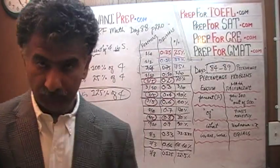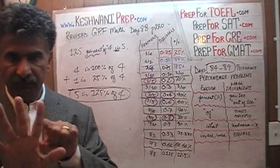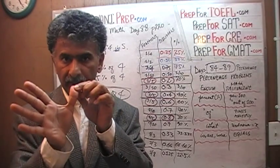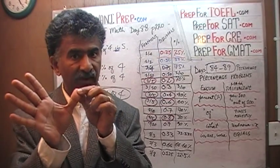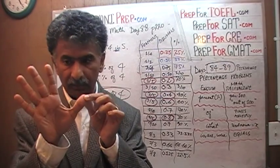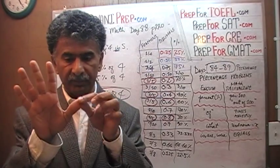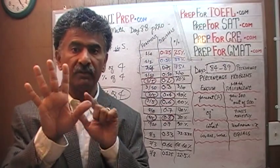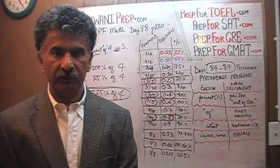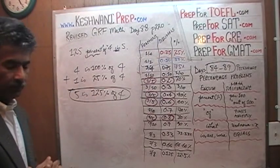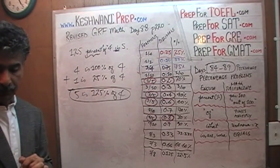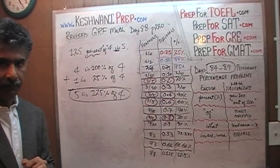Let me do it one more time: 5 is made up of 4, which is 100% of the quantity, plus another 1, which is 25% of the quantity. 25% of 4 is 1. So 100% plus another 25% is 125%. 5 is 125% of 4. That's it — that's all I have for today. I will see you tomorrow.